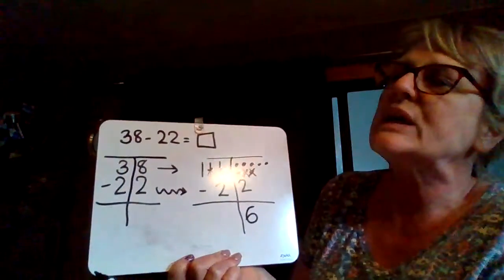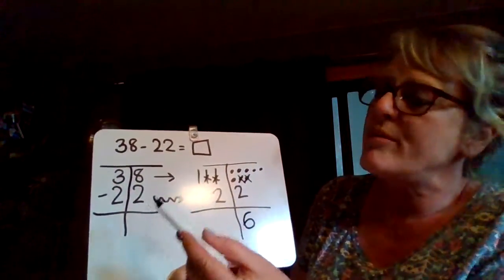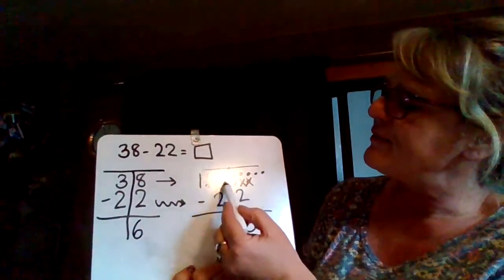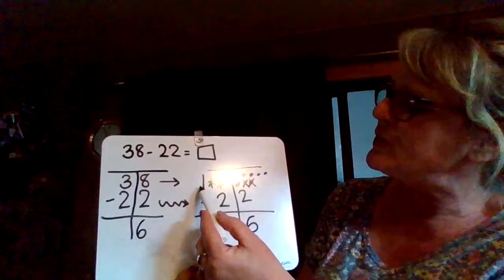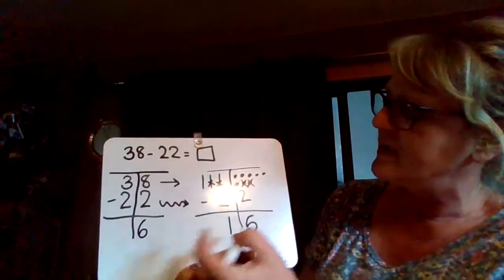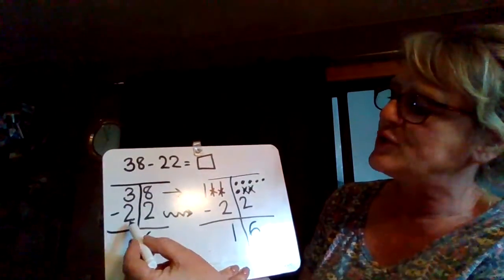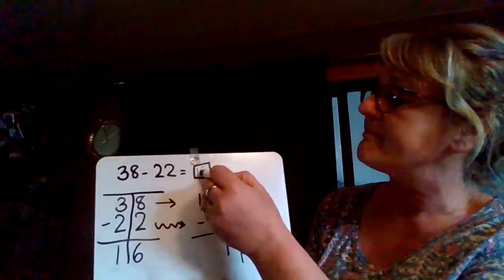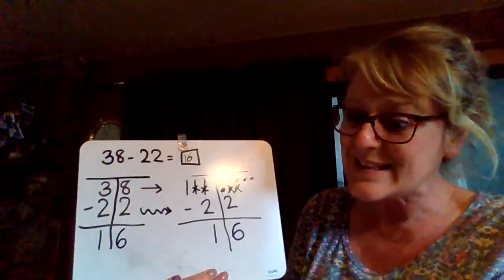Which is true. 8 take away 2 - 2 from 8 is 6. And 3 take away 2, we have 1 left. So 3 subtract 2 is 1. What's our answer? Yeah, 16. Awesome.